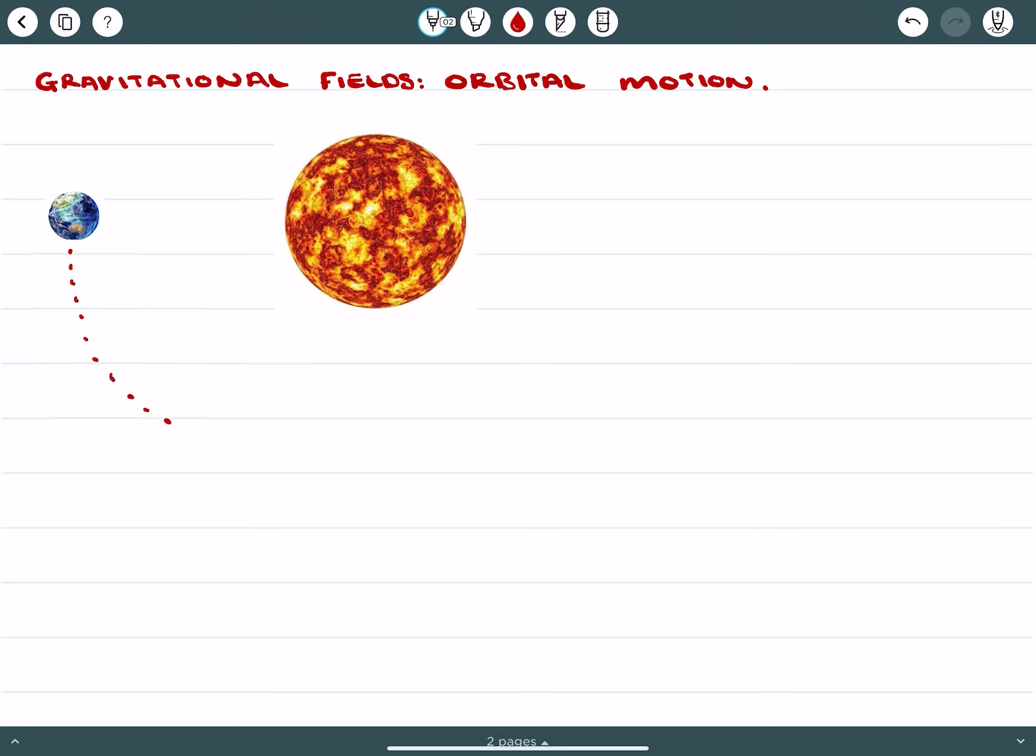Here I've got an example of the Earth-Sun system and we all know that the Earth rotates around the Sun or orbits the Sun, and the things that we want to be able to discover with this...